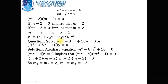Another example: y'''' - 8y'' + 16y = 0. This can be written as (D⁴ - 8D² + 16)y = 0, and the auxiliary equation is m⁴ - 8m² + 16 = 0. Using the formula (a - b)², we write (m² - 4)² = 0.